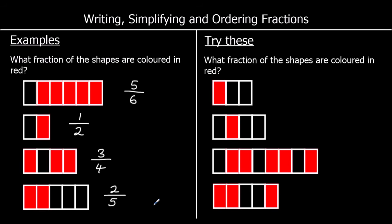The first one, there are three parts. One is in red, so one out of three — one over three or one third. For the second one, we've got four parts. One's red, so one out of four, which we write as one over four or one quarter.